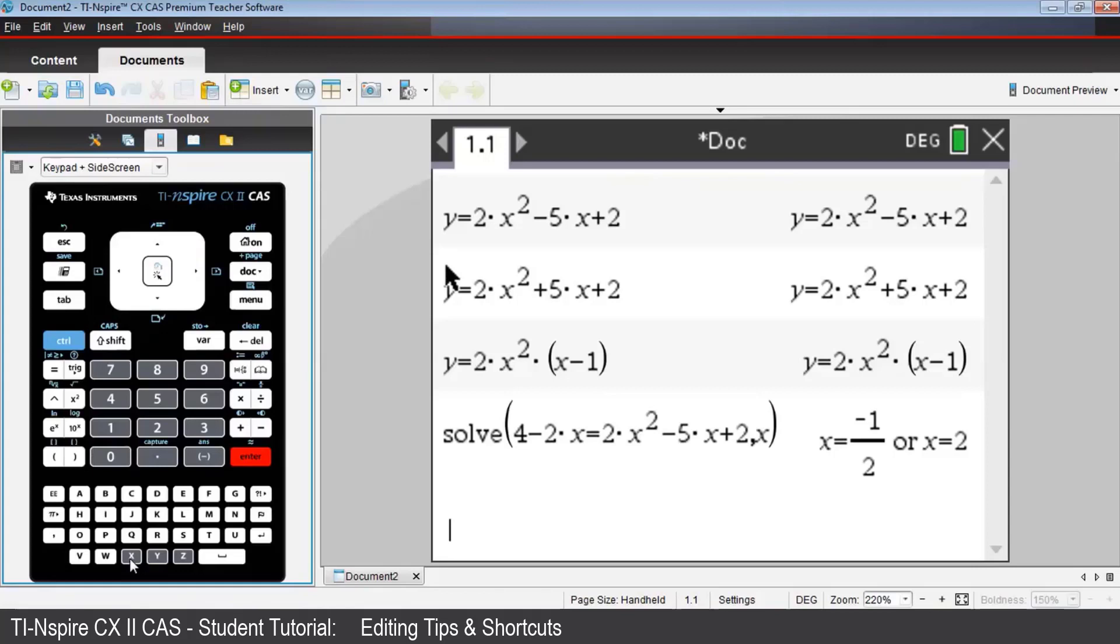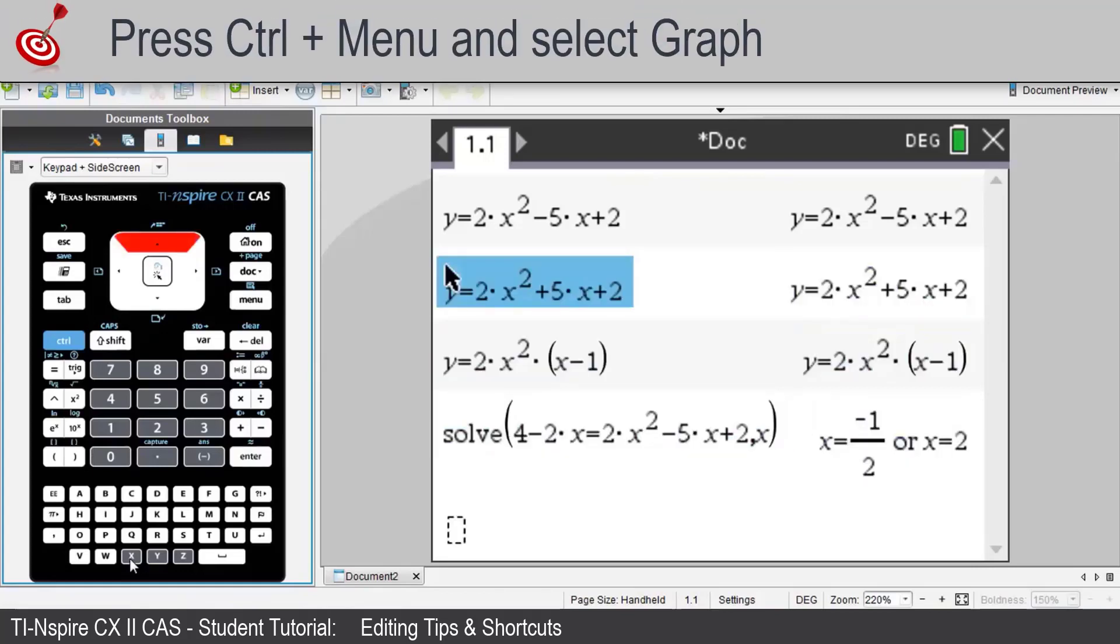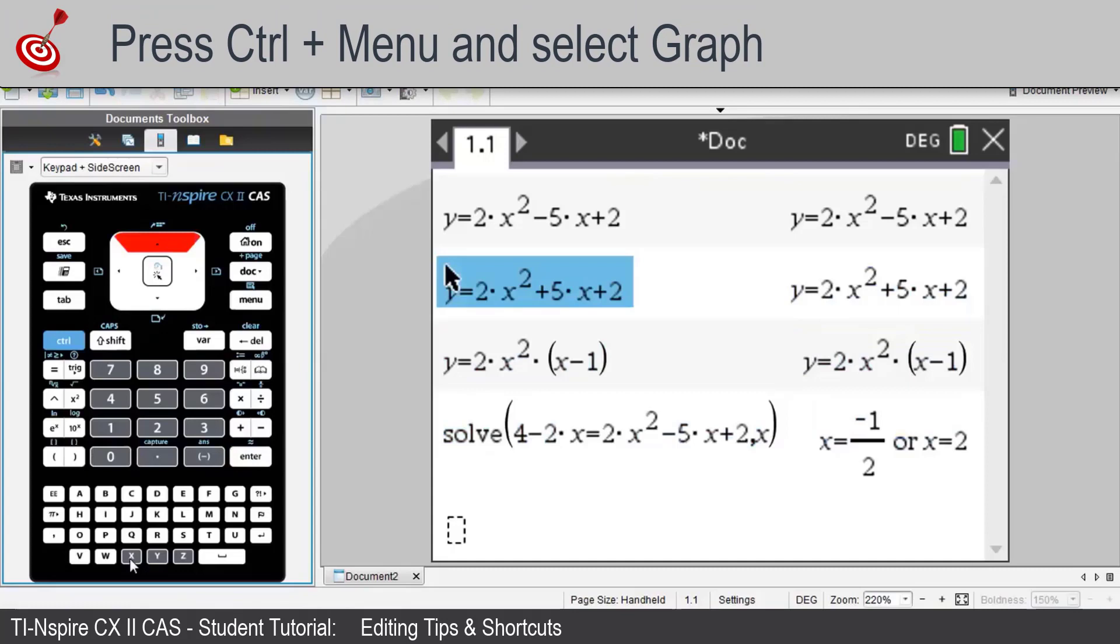Expressions and equations in the calculator application can be copied and pasted into other applications. Let's copy the second quadratic, including its y equals, by pressing the up arrow five or six times so that it's selected. Then press Ctrl C to copy it.